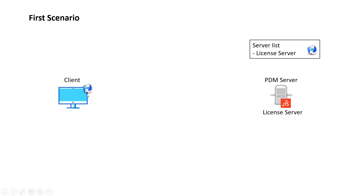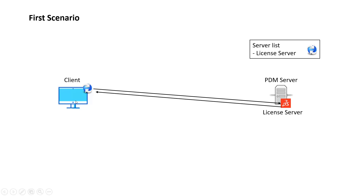Essentially what this allows us to do is when the client tries to connect to the PDM vault, it's going to try to connect to the license server. If the licenses are available, the license is going to be returned to the client, the client will be able to check that out, and it's going to be allowed to log in to the vault. That's the simple scenario we normally have.